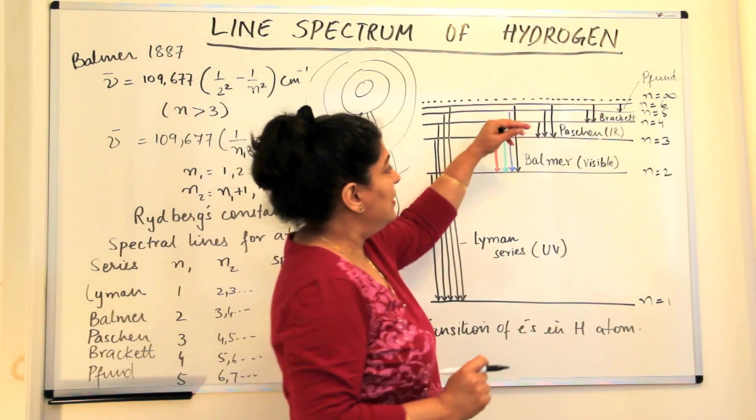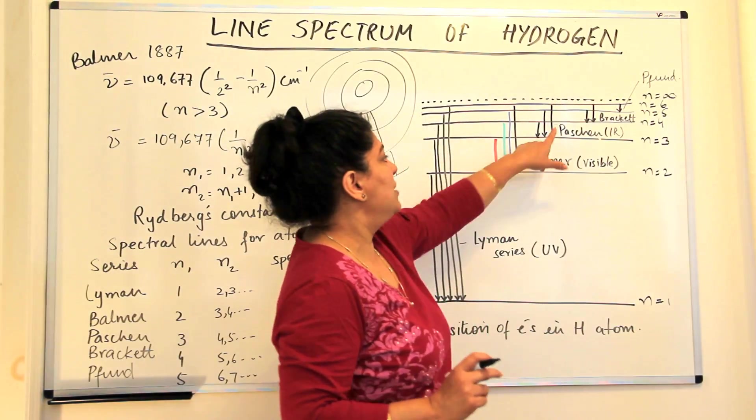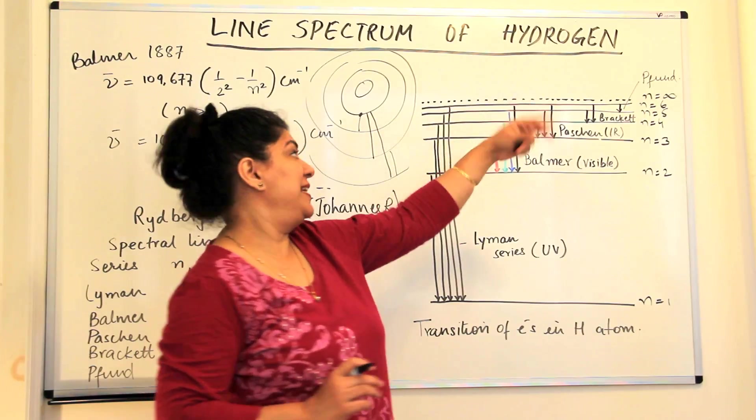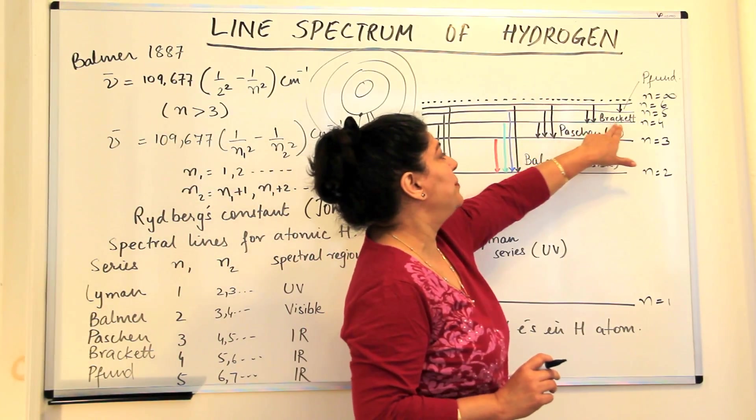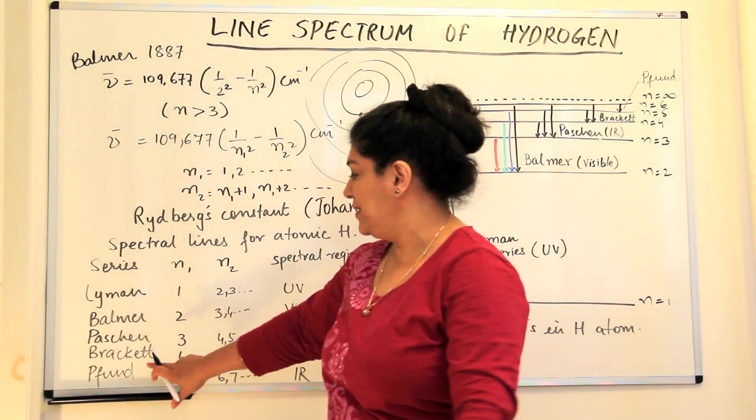After that is the Brackett series. The Brackett series is when n₁ is 4 and n₂ is 5, 6. When they return, we get the Brackett series. And finally, is the Pfund series. The Pfund series is where n₁ is 5 and n₂ is greater than 5.